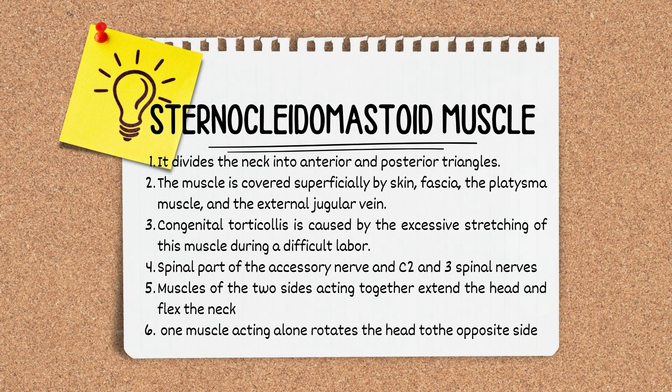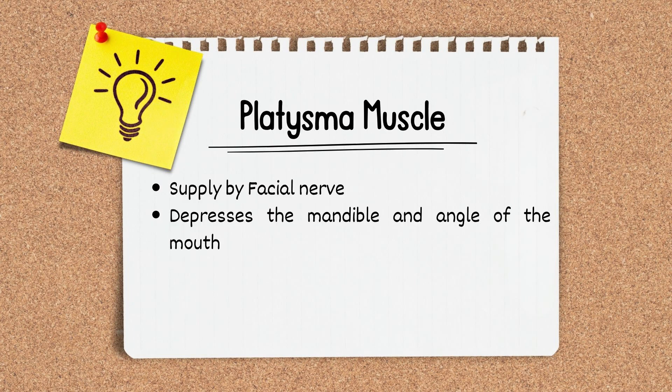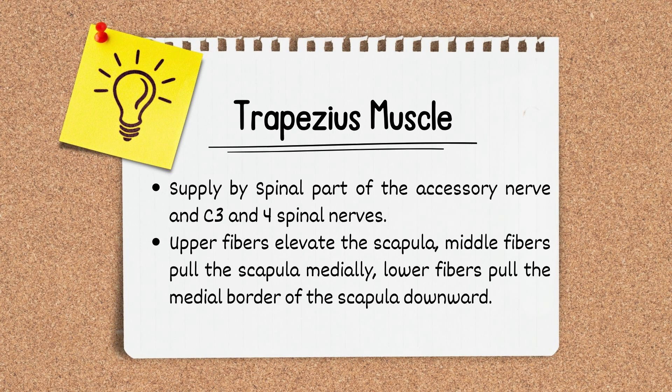The spinal part of the accessory nerve and C2 and C3 spinal nerves supply this muscle. When muscles of the two sides act together, they extend the head and flex the neck, while one muscle acting alone rotates the head to the opposite side. The platysma muscle is supplied by the facial nerve, and its function is to depress the mandible and the angle of the mouth.